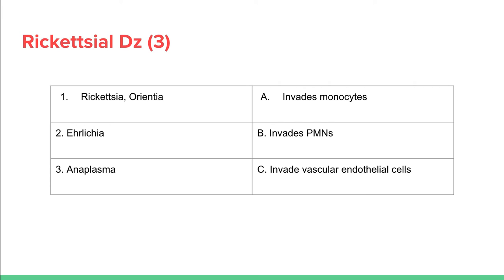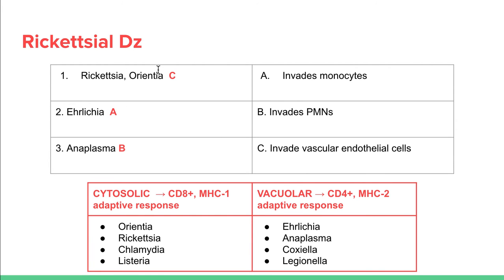Rickettsia diseases: Rickettsia rickettsii causes Rocky Mountain spotted fever and invades vascular endothelial cells. Ehrlichia invades monocytes, and Anaplasma invades polymorphonuclear cells. These are all intracellular bacteria — you need to know whether they're cytosolic or vacuolar intracellular. For cytosolic bacteria, we use a CD8+ MHC class I response; for vacuolar intracellular bacteria, we use a CD4+ MHC class II adaptive response.